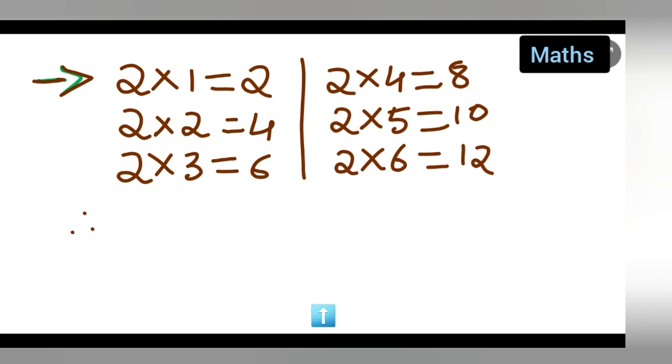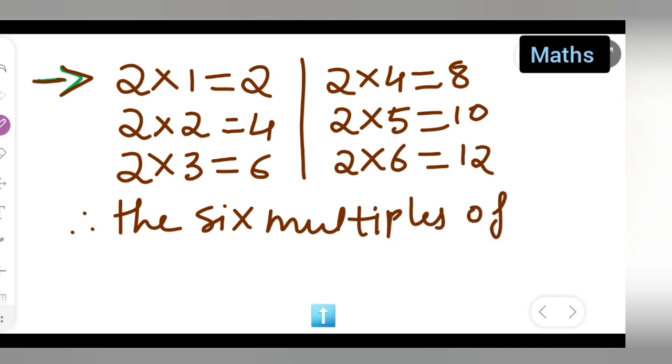Therefore you all can write down the 6 multiples. The 6 multiples of 2 are: 2, 4, 6, 8, 10, and 12.